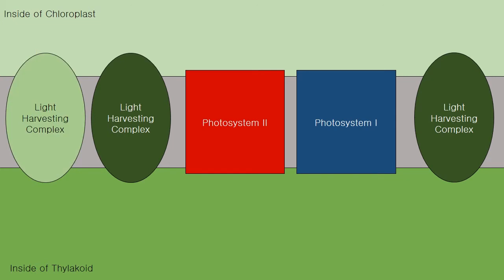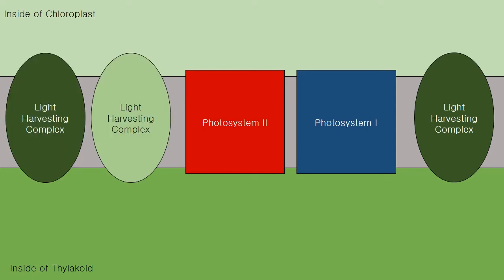Light harvesting complexes are abundant in the thylakoid membrane. They are able to deliver excitation energy from photons to other light harvesting complexes. These chain together and eventually deliver energy to specialized pigment protein complexes with reaction centers.